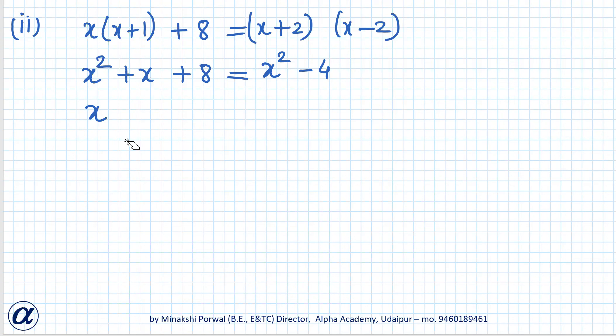Now it is x² on this side also and that side also. So x² and x² will get cancelled. x + 8 = -4. x + 8 + 4 = 0. x + 12 = 0.